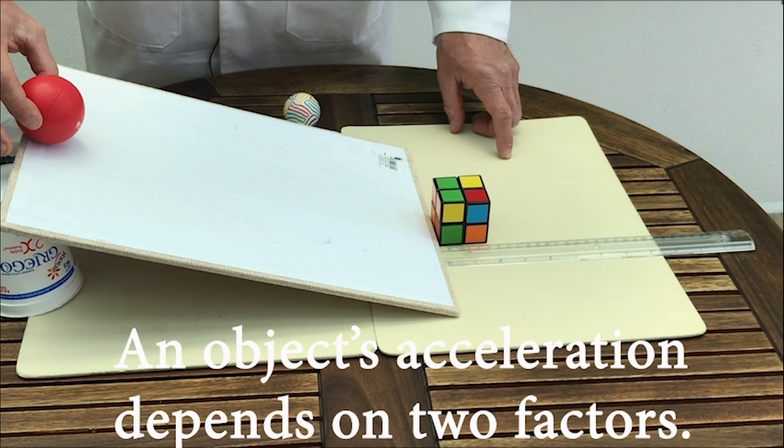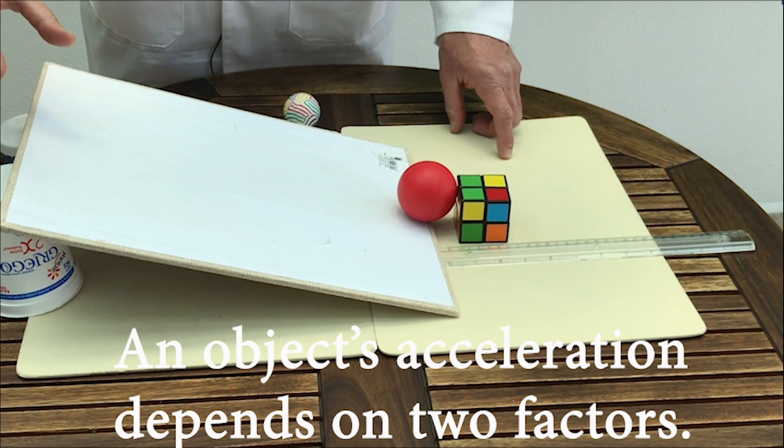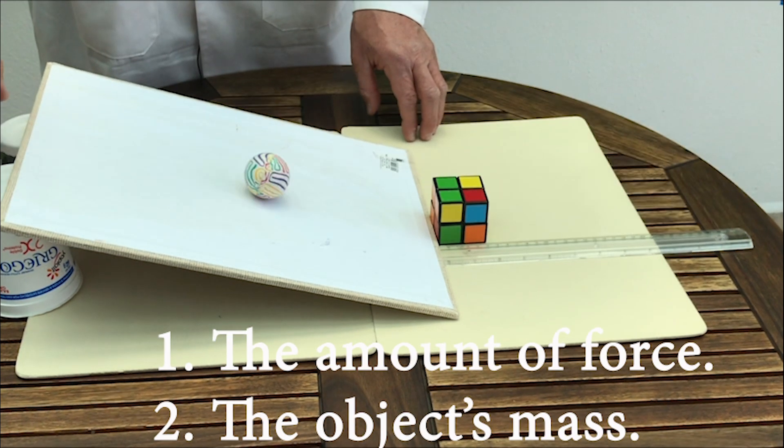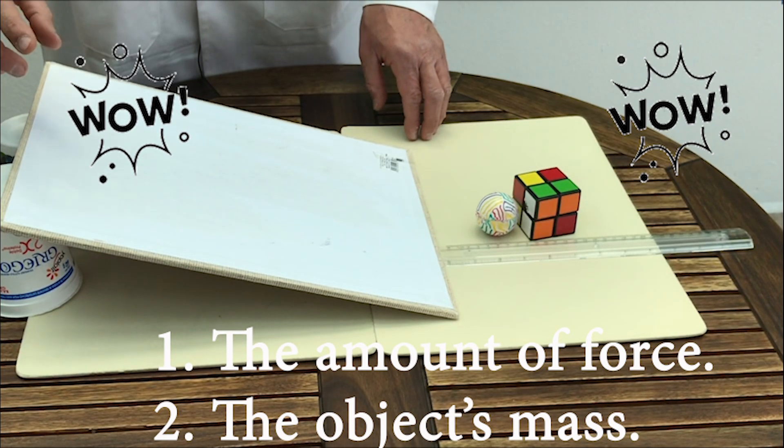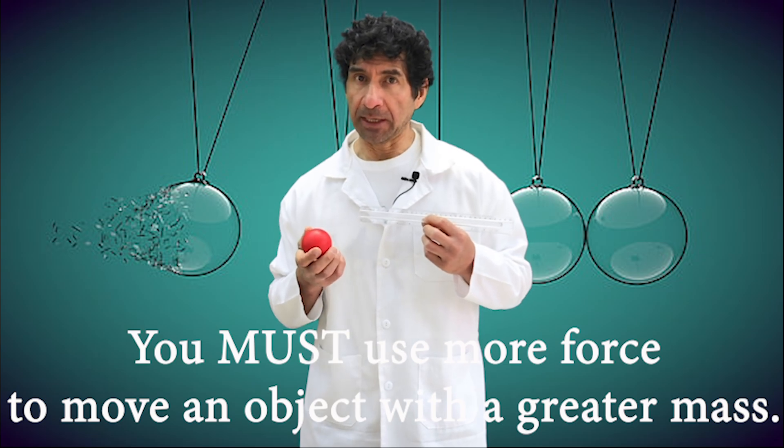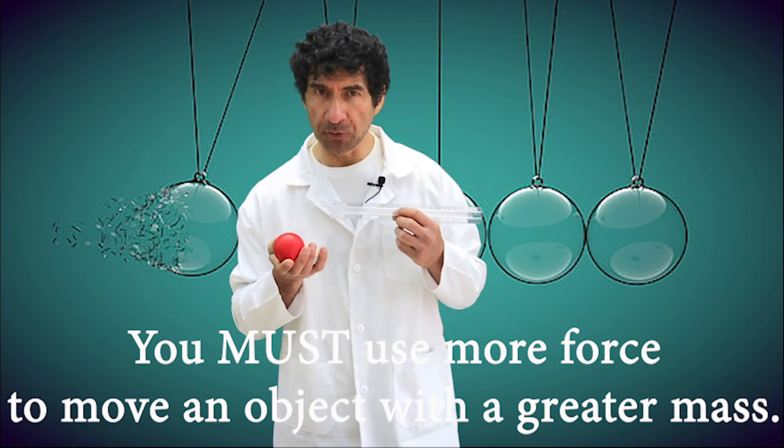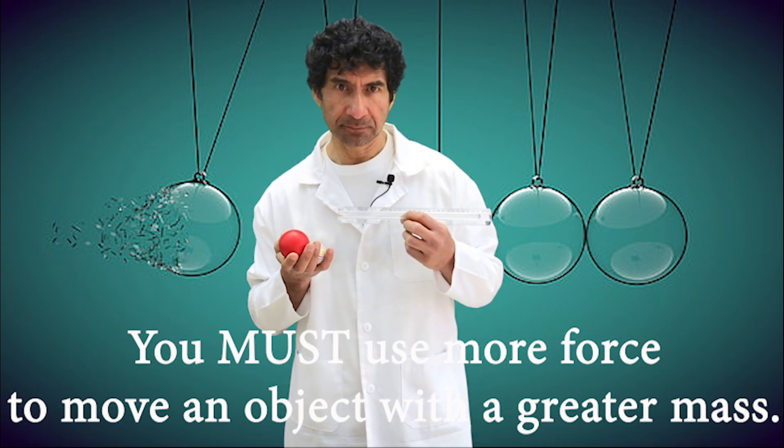Newton's second law of motion states that an object's acceleration depends on two factors: the amount of force applied to the object and the object's mass. Newton's second law explains why you must use more force to move an object with a greater mass. Can you do it?